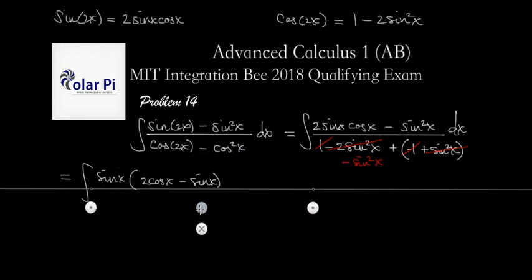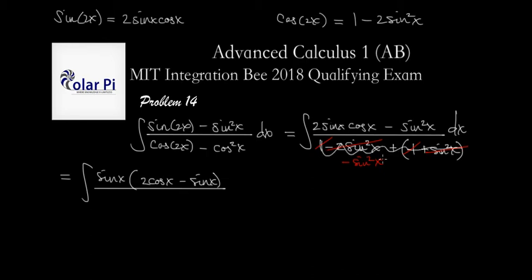Now, notice that the whole denominator just turns into negative sine squared x, and that factors as negative sine x times sine x. And seeing that I have a sine x right here, I can cancel that with that. I forgot to write my dx here. But now our integral is a bit simpler. And it is 2 cosine x minus sine x, and then this is divided by negative sine x, and then dx.